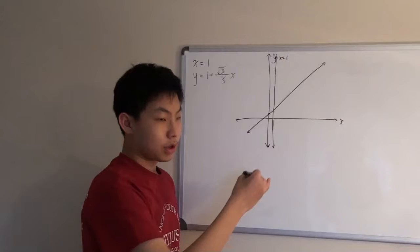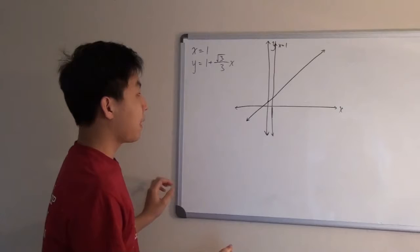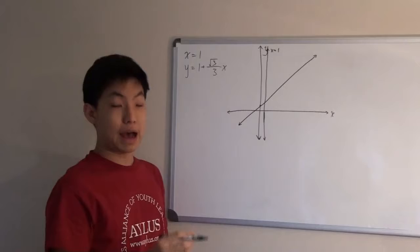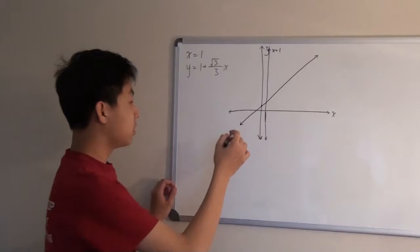So, since one of the lines is vertical, and since equilateral triangles have symmetry in all of its sides, that means the third line is going to be the opposite slope of this line. It would be negative root 3 over 3. And since it passes through the origin, that means it's just going to be negative root 3 over 3.